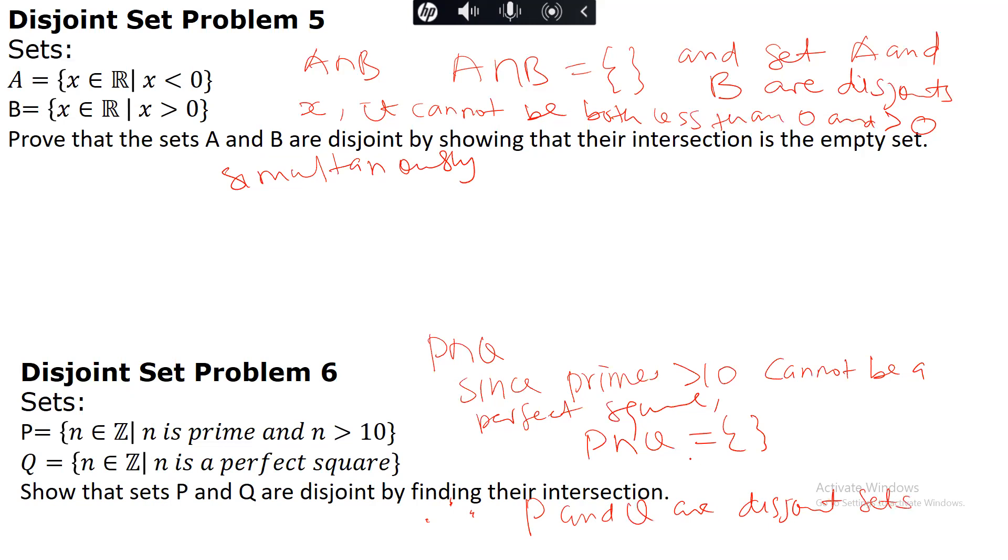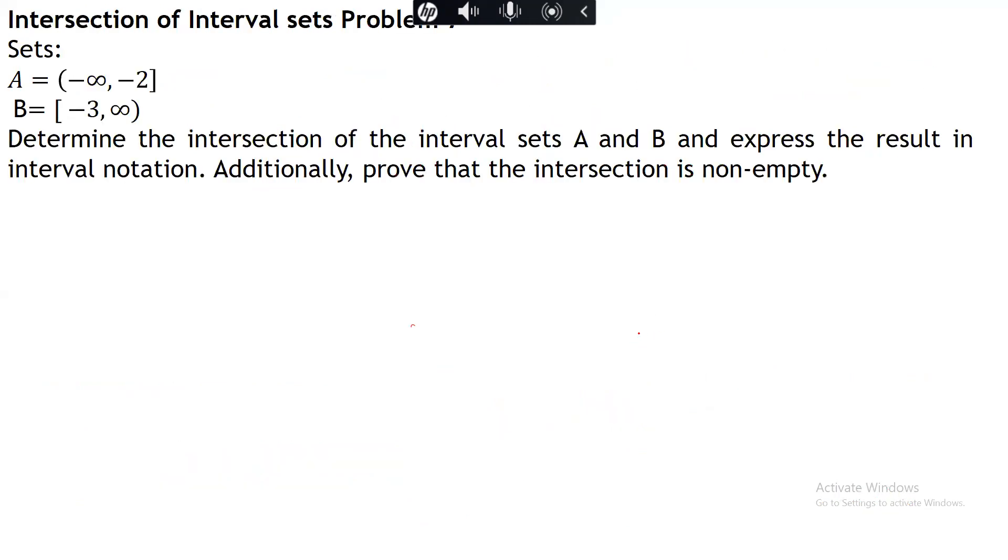Let's look at this example now. We are supposed to determine the intersection of the interval sets A and B and express the result in interval notation, and we are also expected to prove if the intersection is empty. Now if we look at A intersection B here, it consists of elements that are both common to A and B.